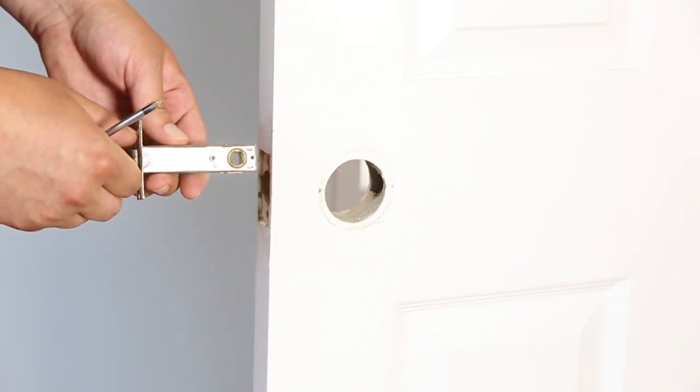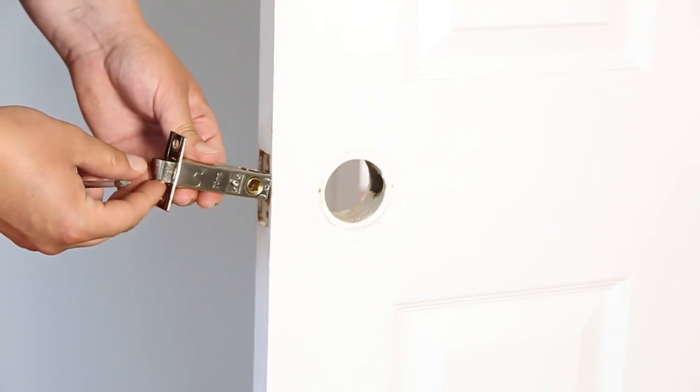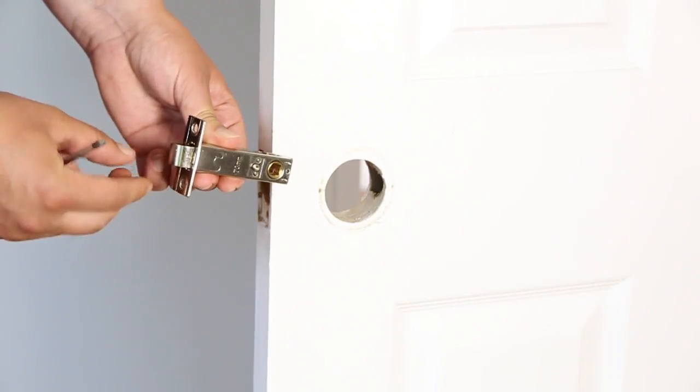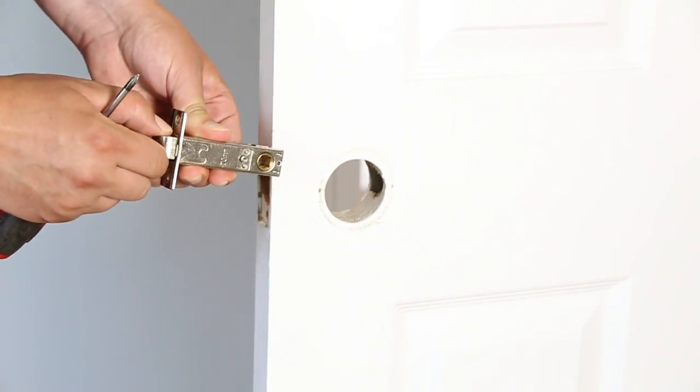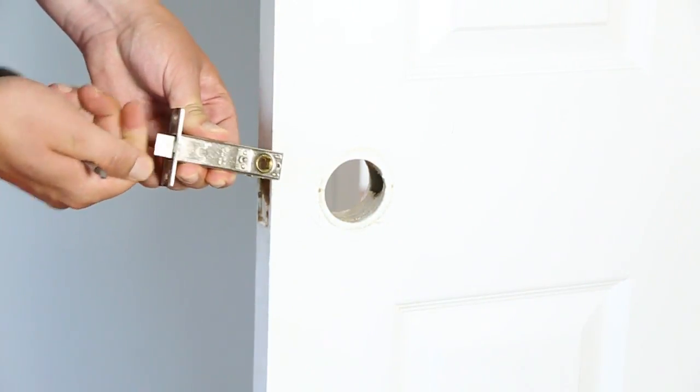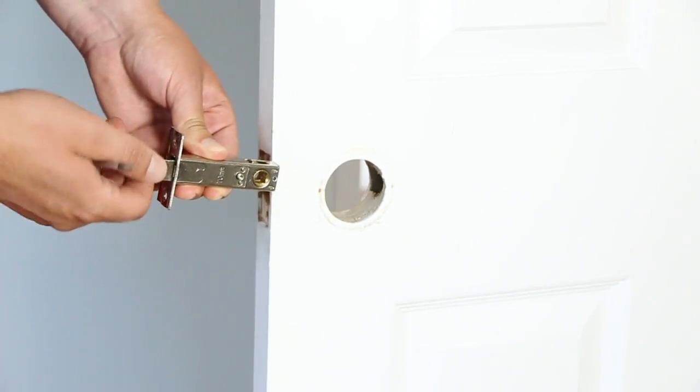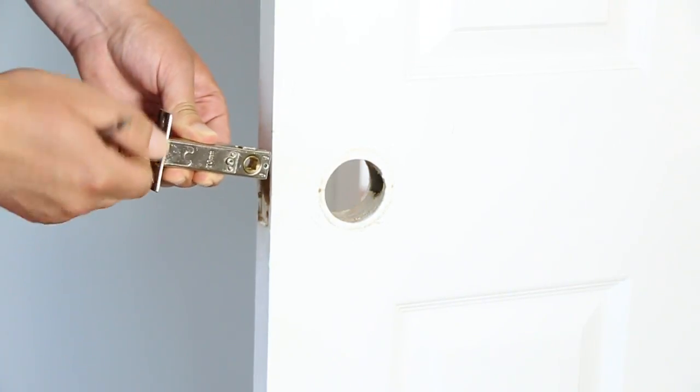The first thing that we're going to take from the new handles, from the set, we're going to take the latch. Over here before putting it in you can adjust this piece right here. Because the door is closing that way, this latch has to face this way. So you just flip it, and if the door goes the other way you got to flip it the other way.